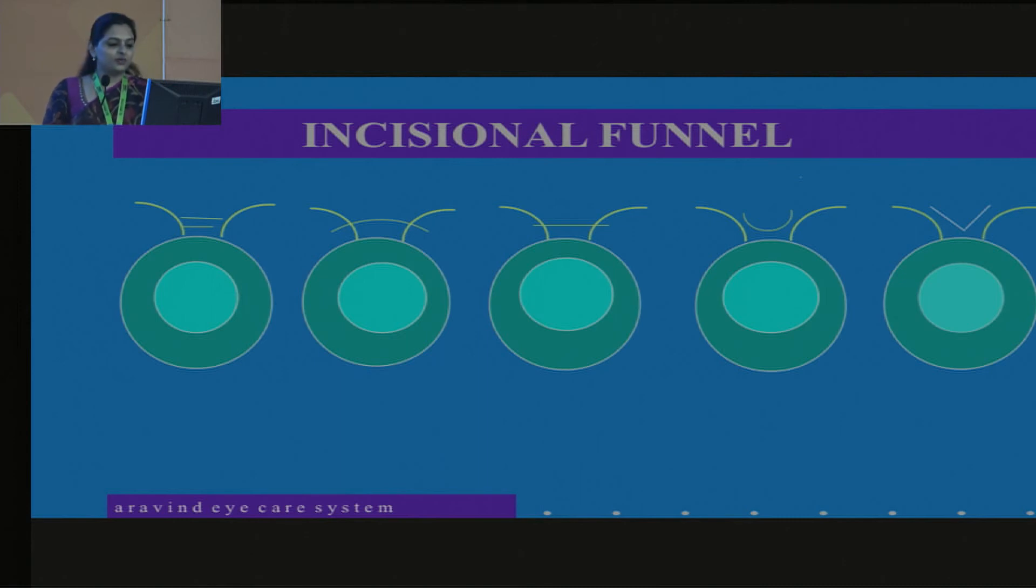So this concept of incisional funnel. The incisional funnel zone is called as a neutral zone. It was actually described by Paul Koch in the year 1991. This area is supposed to be a neutral zone where you don't have any astigmatism. So this is an imaginary line, a curved line that is drawn from the limbus away. As you see, this incision, though it is within the funnel, it is too small for the nucleus to come out. The smile and the straight incision always tend to be outside the funnel, whereas the frown and the inverted chevron lies inside the funnel. So this will always lead to lesser astigmatism.